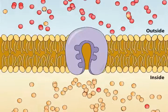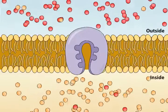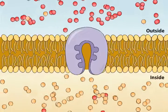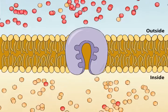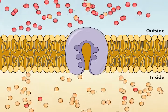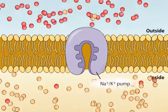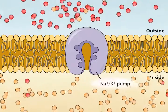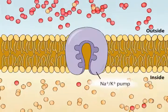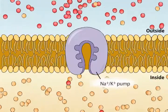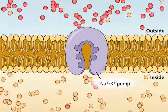A nerve cell uses the concentration differences in sodium and potassium ions across its membrane to conduct action potentials. A pump, called the sodium-potassium pump, builds up these gradients by exporting sodium from the cell and importing potassium.